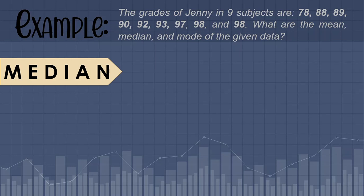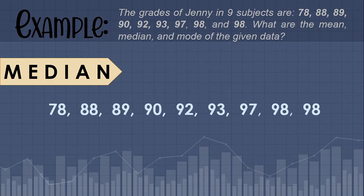Next, let's compute the median. The first step to compute the median of ungrouped data is to arrange our values from lowest to highest. As you can see in our given set of data, they are already arranged from lowest to highest, from 78 up to 98.